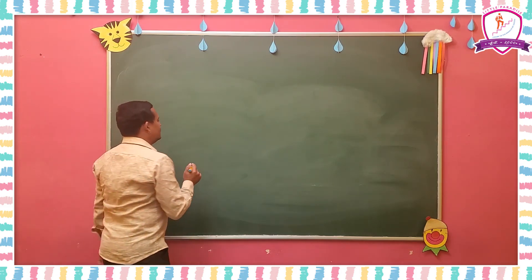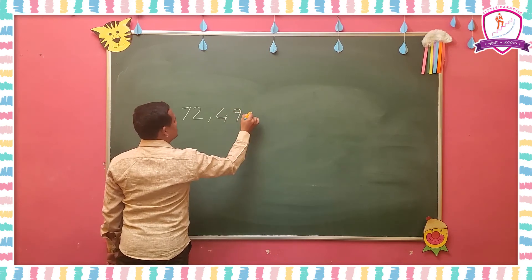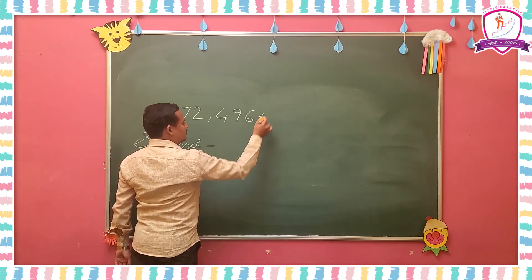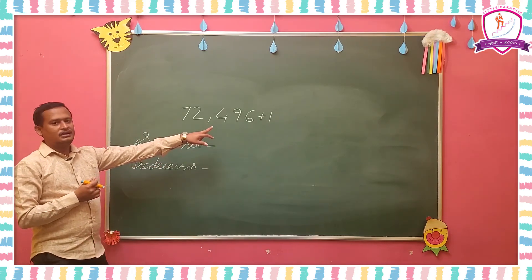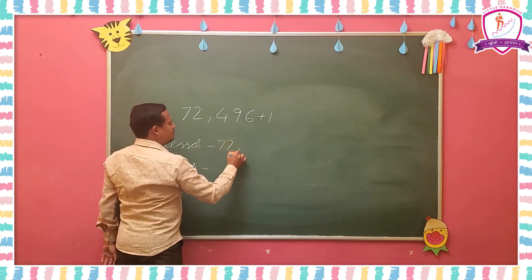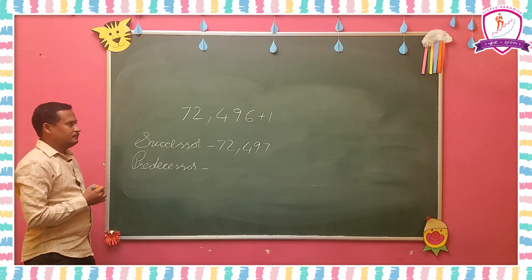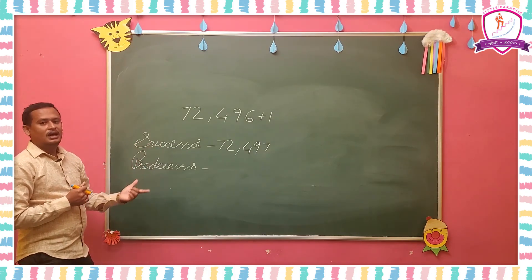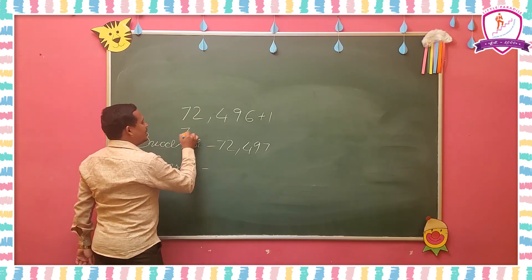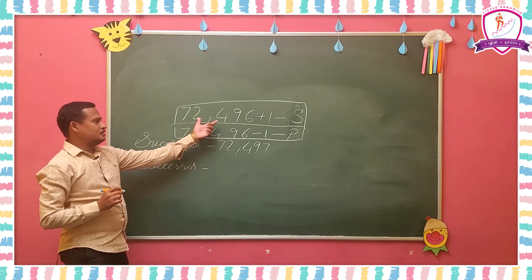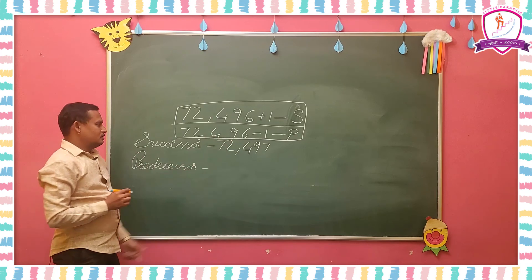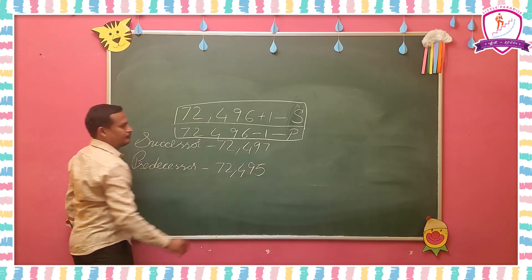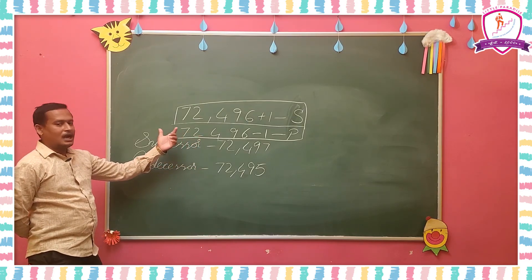I am going to explain another example. I am taking the 5-digit number 72,496. To find the successor, we add 1 to the given number — so the successor of 72,496 is 72,497. To find the predecessor, we subtract 1 — so 72,496 minus 1 gives us 72,495. Like that, we have to find the successor and predecessor for any number.